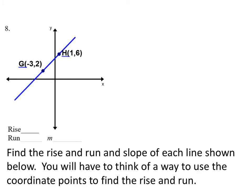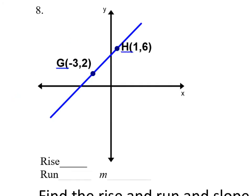To find the distance for rise and run, we again use subtraction. For the rise, I look at the y values — I take six and subtract the other y value two, which gives a rise of four. For the run, I take one and subtract negative three — subtracting a negative means adding, so one minus negative three is positive four. For the slope, rise of four over run of four simplifies to one.